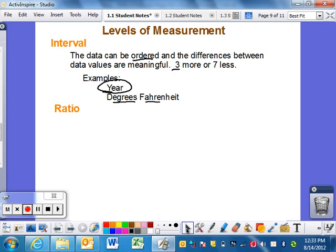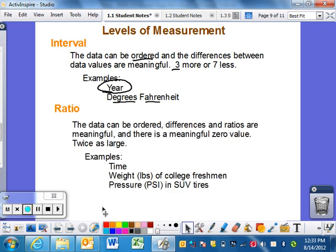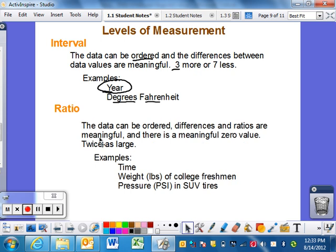Ratio: data can be ordered, and differences and ratios are meaningful. Since ratios are meaningful, there has to be a meaningful zero value. When we have zero money, we have actually zero dollars. Time to go somewhere - two minutes means from zero to two minutes. Zero pounds, pressure in wheels - a flat tire has no pressure, that's a concrete zero.